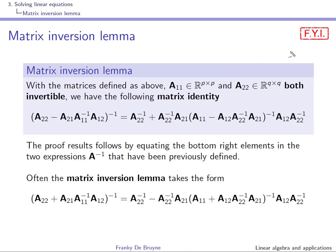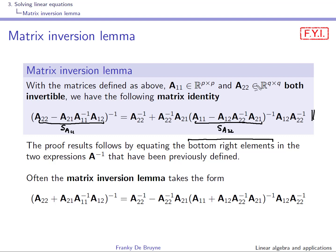This equation is called the matrix inversion lemma. Remember that both A11 and A22 need to be invertible. What we have done is equate the bottom-right elements from the two expressions of A inverse. The Schur complement based on A11 and the Schur complement based on A22 both have an inverse since A11 and A22 are invertible.